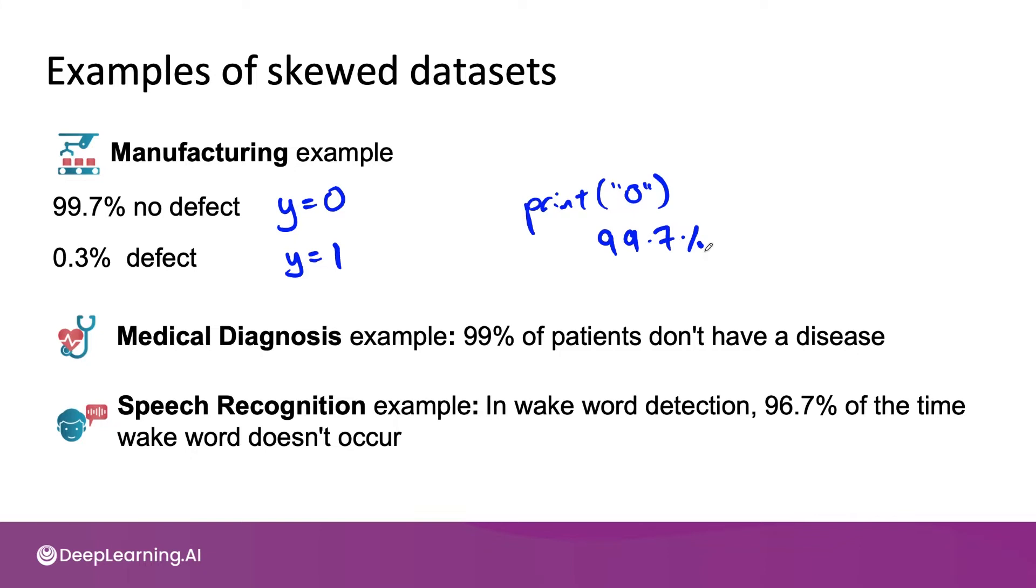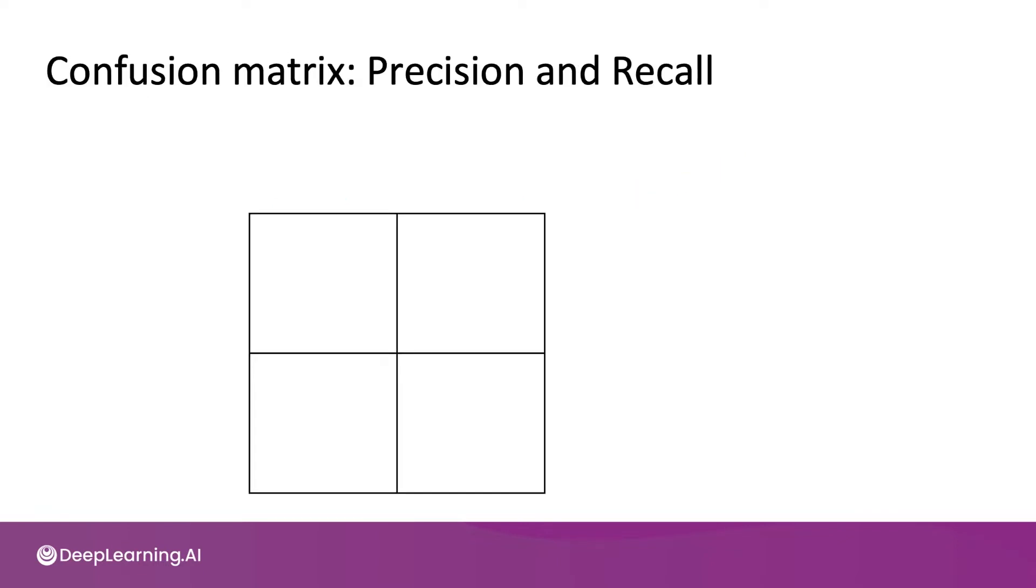When you have a very skewed data set like this, raw accuracy is not that useful a metric to look at, because print zero can get very high accuracy. Instead, it's more useful to build something called a confusion matrix.